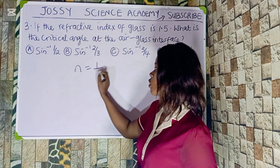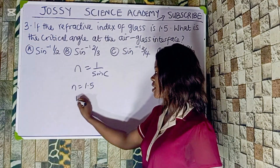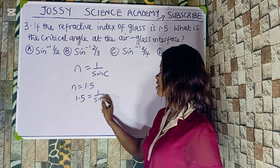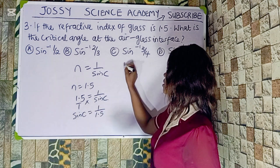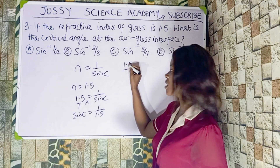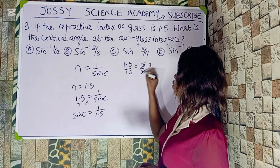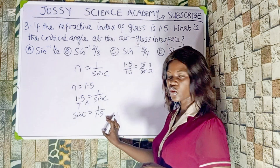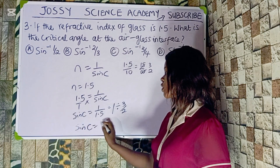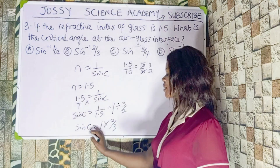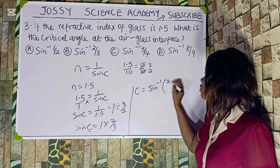We are given the refractive index as 1.5, so: 1.5 = 1 over sin C. Cross-multiplying, sin C = 1 over 1.5. Converting 1.5 to a fraction: 1.5 = 15/10 = 3/2. So sin C = 1 divided by 3/2, which gives sin C = 2/3. Taking the inverse sine, C = sin⁻¹(2/3).